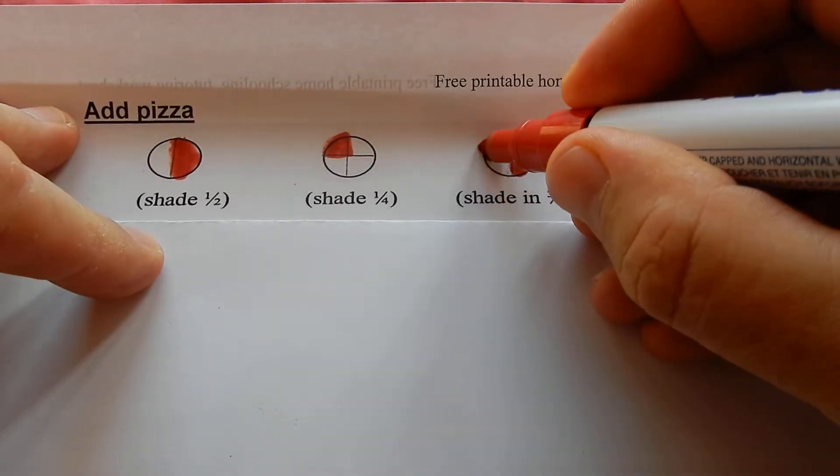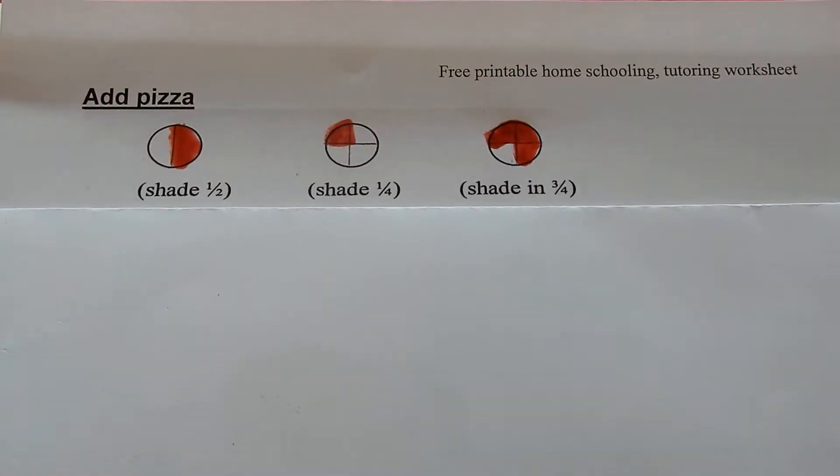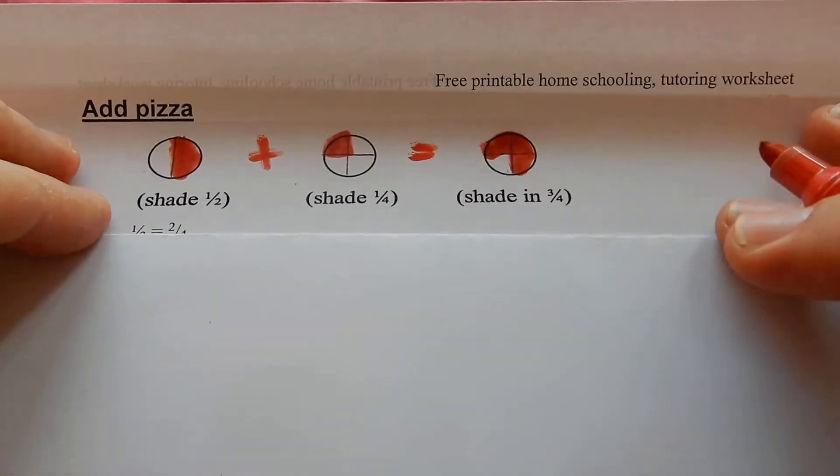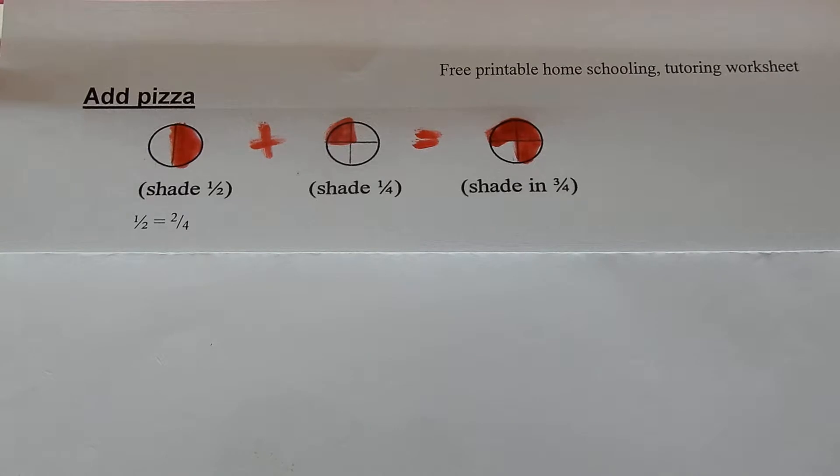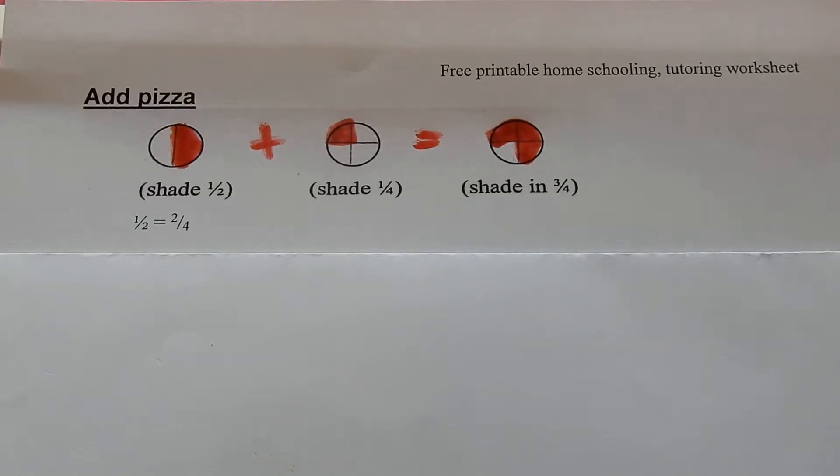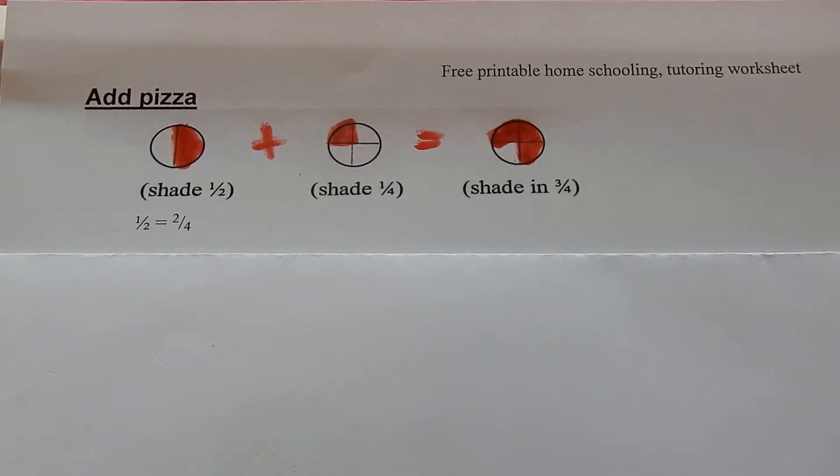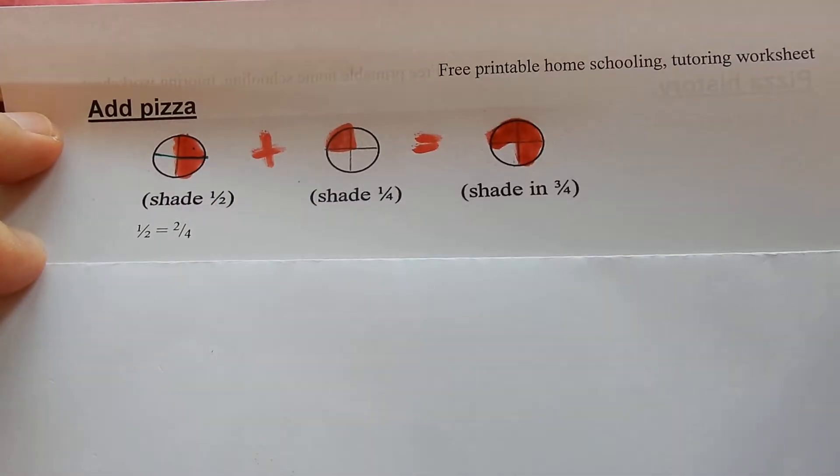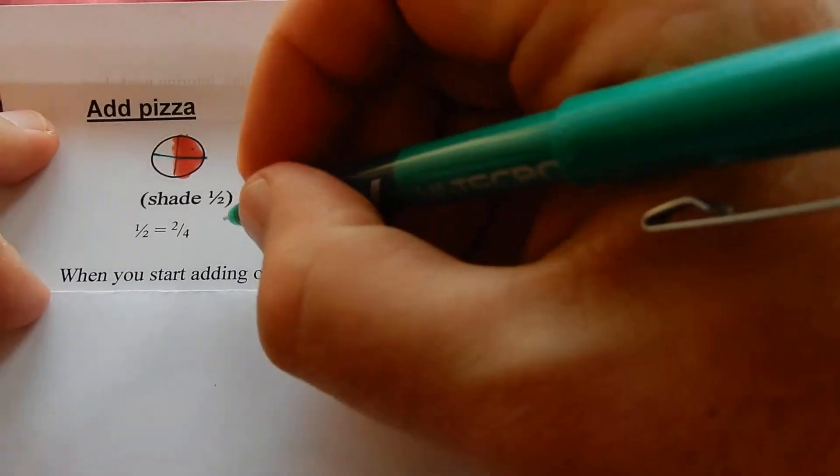This was to show that a half plus a quarter equals three quarters. A half is worth two quarters. That's why a half is changed into two quarters. Because two quarters plus one quarter equals three quarters. That makes a lot more sense.